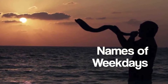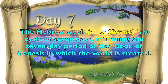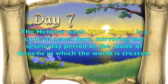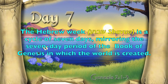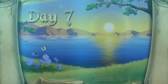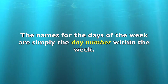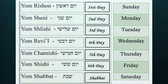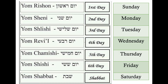The Hebrew week, Shavua, is a cycle of seven days mirroring the seven-day period of the book of Genesis in which the world was created. The names for the days of the week are simply the day number within the week: Yom Rishon — first day, Sunday; Yom Sheni — second day, Monday; Yom Shlishi — third day, Tuesday; Yom Revi'i — fourth day, Wednesday; Yom Chamishi — fifth day, Thursday; Yom Shishi — sixth day, Friday; and Yom Shabbat — rest day, Saturday.